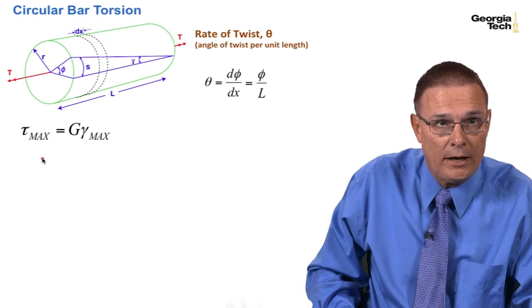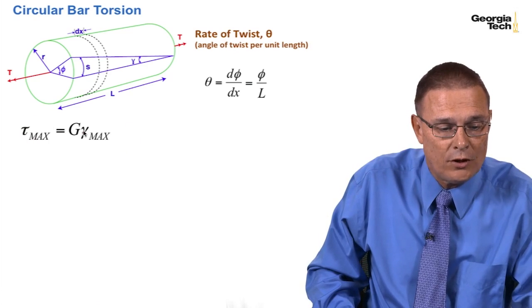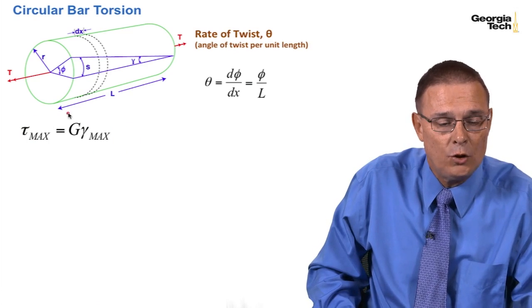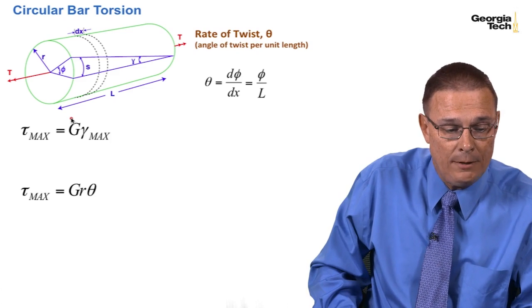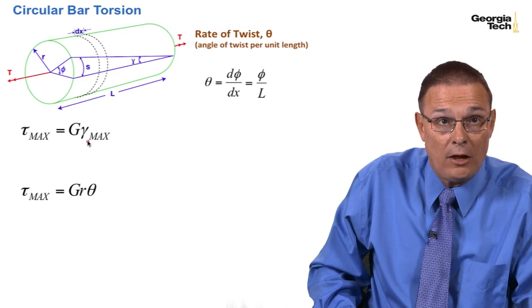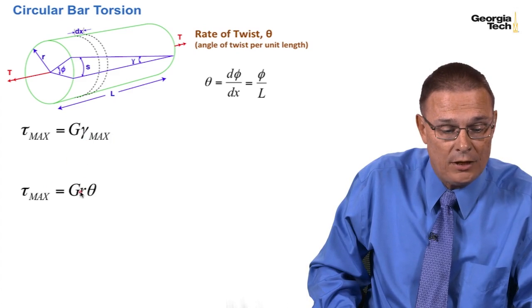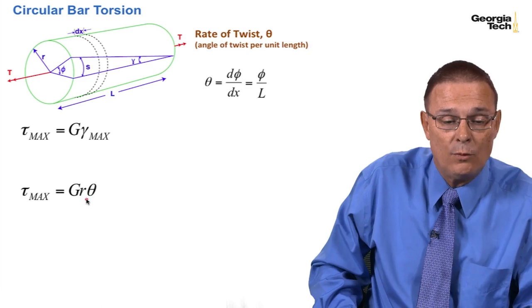And here's Hooke's Law again, relating the maximum shear stress to the maximum shear strain using the modulus of rigidity. We know that tau max, we've developed the relationship that tau max was equal to the radius times the rate of twist.